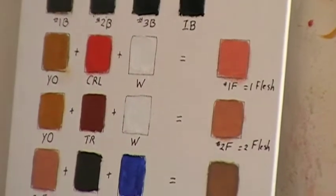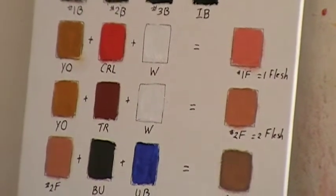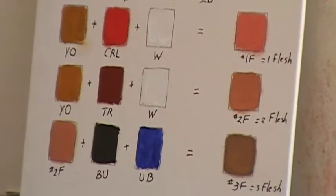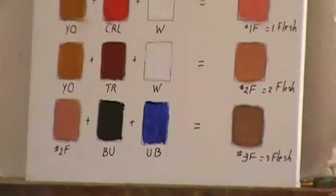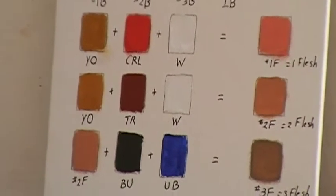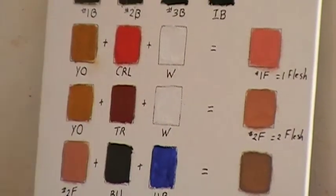Later on, everyone's always interested in flesh tones and they always ask me how do you mix flesh tones. I figured I'd just lump that on here because essentially you're using primary colors to do it. You can take any red, any yellow and any white and you'll get a flesh tone.